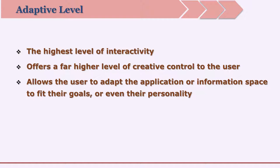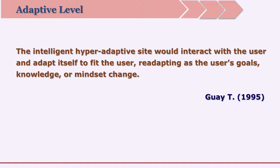The highest level of interactivity is adaptive interactivity. It offers a far higher level of creative control to the user and allows the learner to adapt the application or information to fit their goals and even their personality. The intelligent hyper-adaptive site would interact with the user and adapt itself to fit the user, re-adapting as the user's goals, knowledge, or mindset change. Such a highly interactive package would analyze the learner's characteristics — views, learning styles, psychological and physiological characteristics — and adapt to the learner. When the package itself changes to give an individualized experience to every learner depending on their characteristics and learning styles, that is the highest level of interactivity.